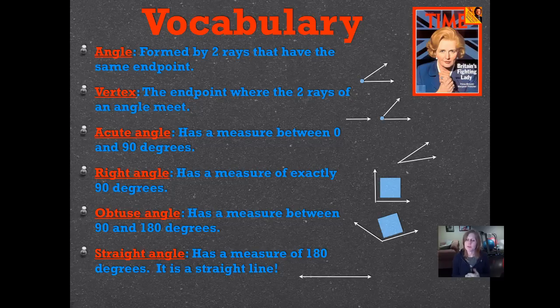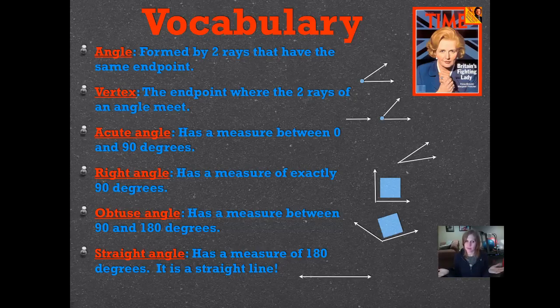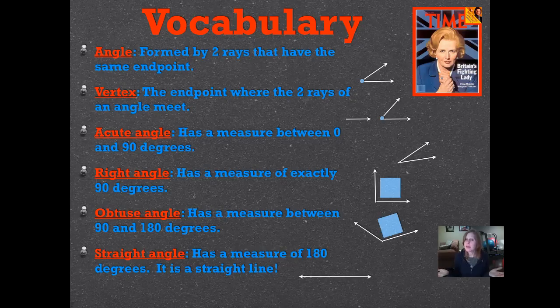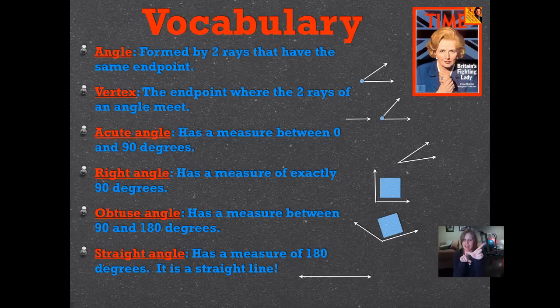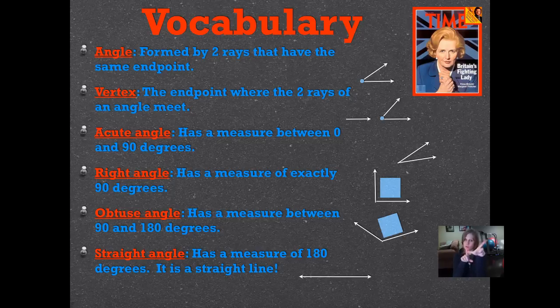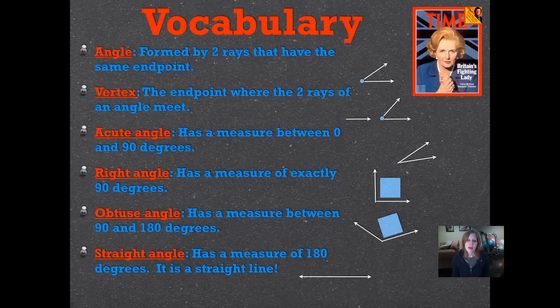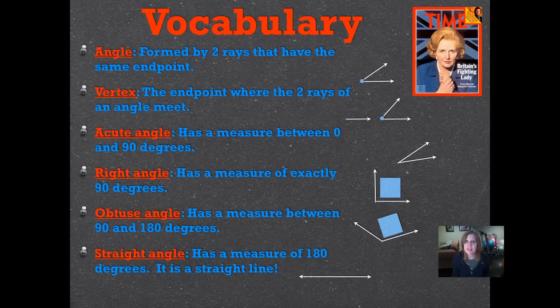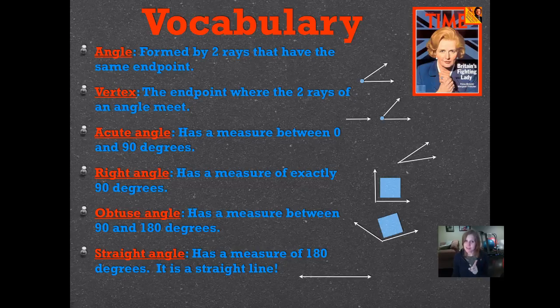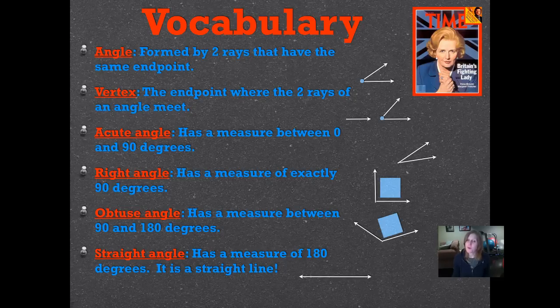An obtuse angle has a measure between 90 and 180 degrees. A right angle is 90 degrees, and 180 degrees is a straight angle. We try to remember obtuse by opening up that right angle. We open it up wider than a 90 degree angle. We say open, obtuse is open. A straight angle has a measure of 180 degrees. It's just a straight line. It doesn't even look like what we think of as an angle, but it is considered a straight angle.